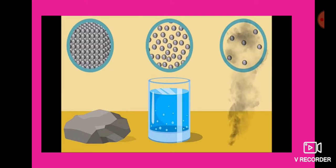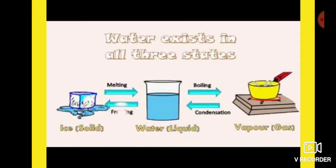In solid, we have a rigid surface — it is tight and there is no space. In liquid, there is a little bit of space. In gaseous state, we have more space. Water exists in all three states — it is the only substance that does so. Water exists in the form of ice, in the form of liquid water, and in the form of vapor.